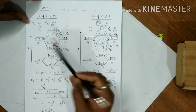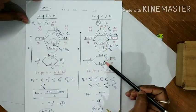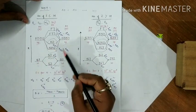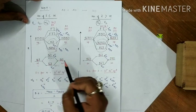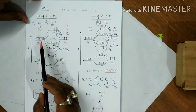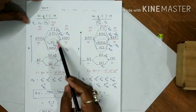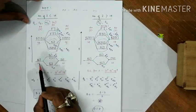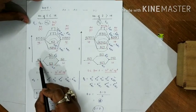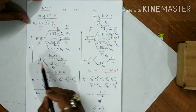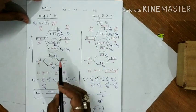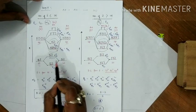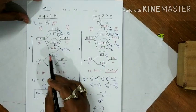For the nitrogen molecule, the configuration is 1s², 2s², 2p³. We fill the electrons in the molecular orbitals in order of energy. In the 2s orbital, both nitrogen atoms have 2 electrons each, giving 4 electrons total to fill the two 2s molecular orbitals — 2 electrons each in σ2s and σ*2s.